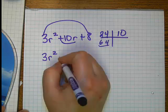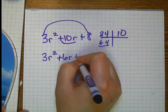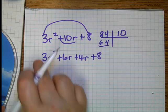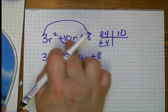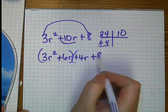So the 3r squared stays the same, plus 6r, plus 4r, plus 8. Now that's the same problem, just written with the middle split. Group the first two together and the second two together.